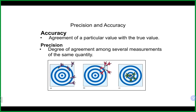In terms of accuracy and precision in chemistry, we calculate percent error — a small percent error means you're close to the true value. Percent deviation or standard deviation is what we look at for precision — how close numbers are to each other.